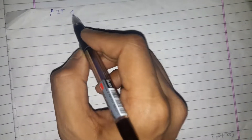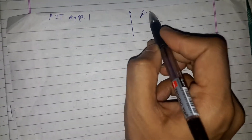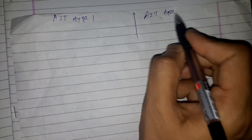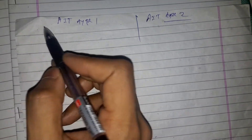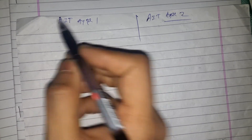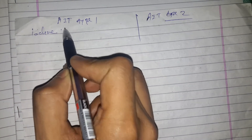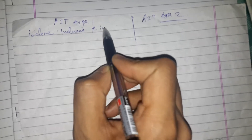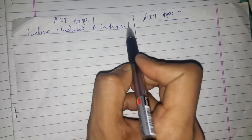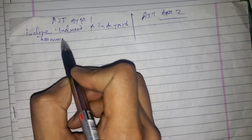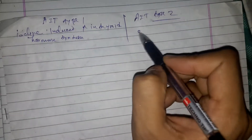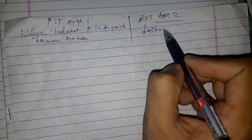Let's discuss amiodarone-induced thyrotoxicosis, abbreviated as AIT. There are two types. Type 1 is iodine-induced increase in thyroid hormone synthesis. Type 2 is destructive thyroiditis.